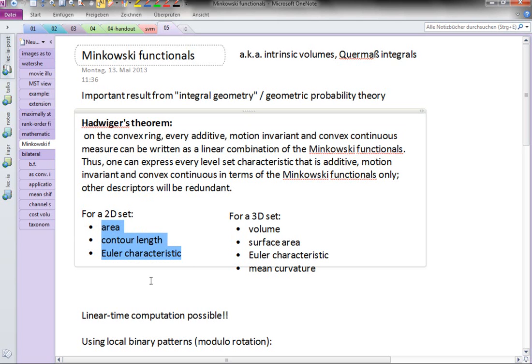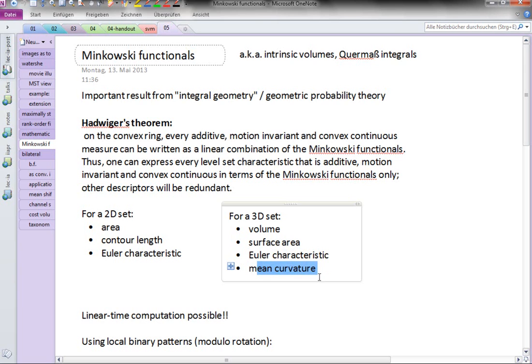These Minkowski functionals are, in 2D, if I have a binary image, just the area of the foreground, the contour length, and the Euler characteristic. In 3D, it's volume, surface area, Euler characteristic, and in addition mean curvature. If you go to 4D, there will be yet another of these Minkowski functionals added.